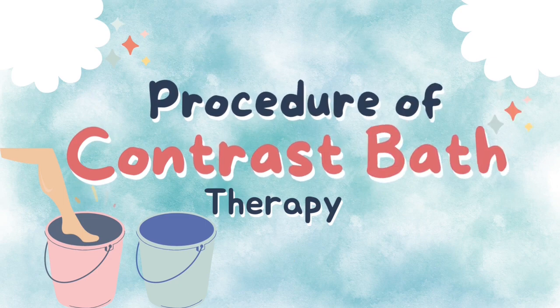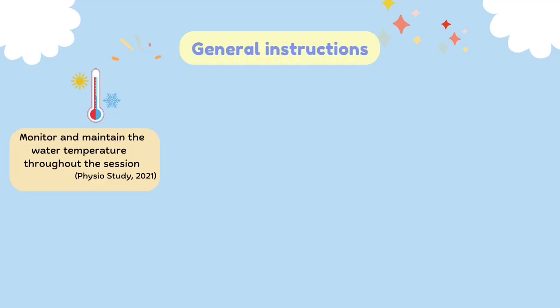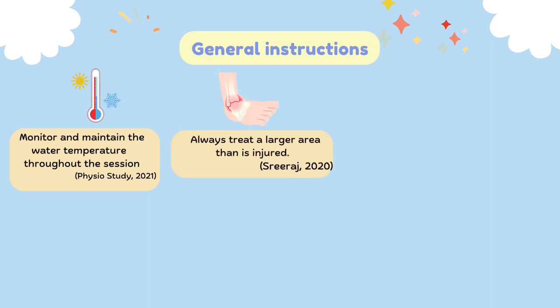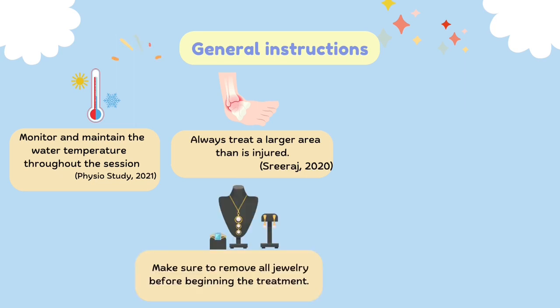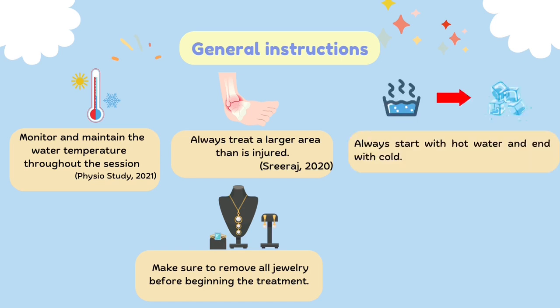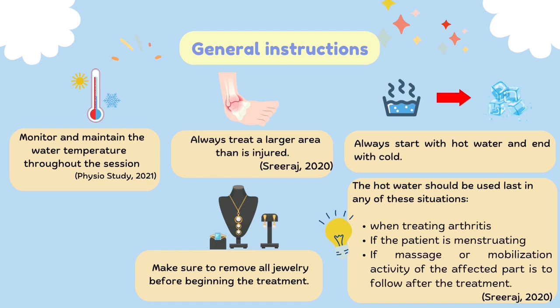Now, let's learn the procedure to perform contrast bath. For general instructions: firstly, we should monitor and maintain the water temperature by adding more warm or ice water to the respective container. Next, always treat a larger area than that which is injured — for example, a sprained ankle should have the water nearly up to the mid-calf. We also need to make sure to remove all jewellery before beginning the treatment. We should always start with hot water and end with cold. However, hot water should be used last in certain situations.